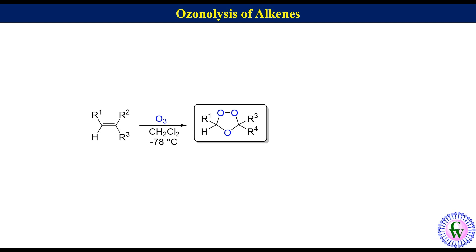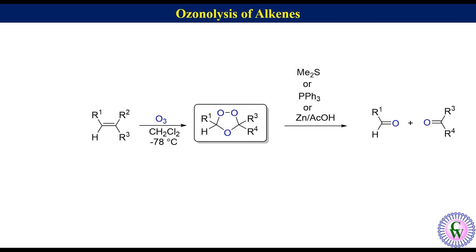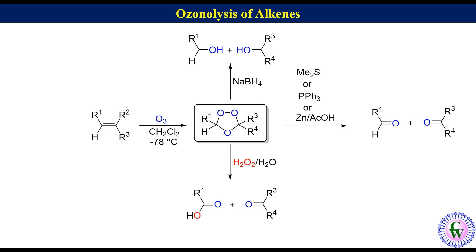Reaction of ozonide with dimethyl sulfide, triphenyl phosphine, or zinc acetic acid gives aldehyde and ketone. With aqueous hydrogen peroxide it gives carboxylic acid and ketone, and with sodium borohydride it gives alcohols.